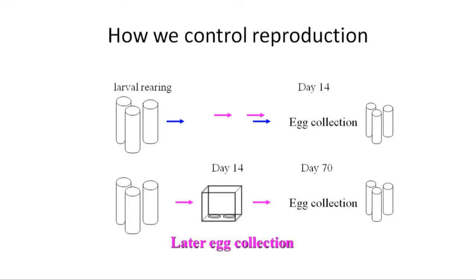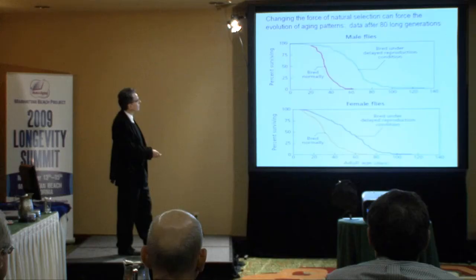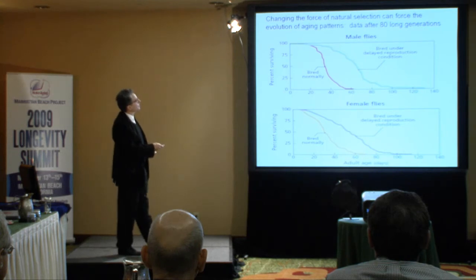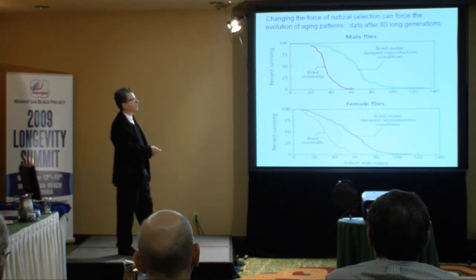You wait and wait for evolution to do its thing. These are the results. These are the controls, bred normally. This data is from about halfway through the experiment — around 15 years ago. This is the product of about 80 generations of delayed breeding. As you can see, they're living much longer — males and also females. At that point it was a little over twice the average lifespan. Now we're around four times the average lifespan, and from what we can tell, it will go on indefinitely.